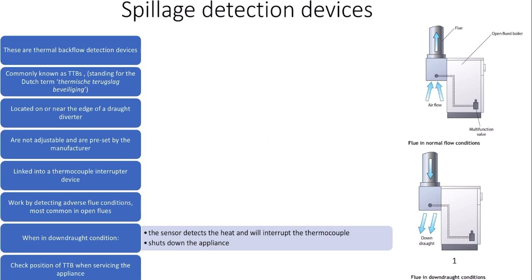Spillage detection devices are thermal backflow detectors. That means that they detect a change in the heat within the draft diverter of an open flue, which activates them.